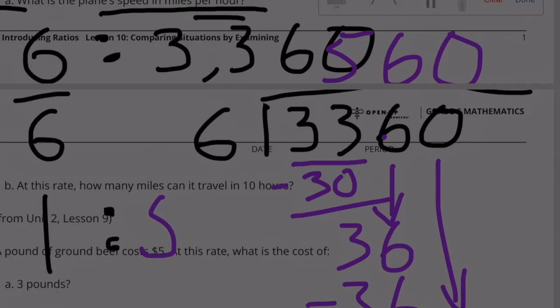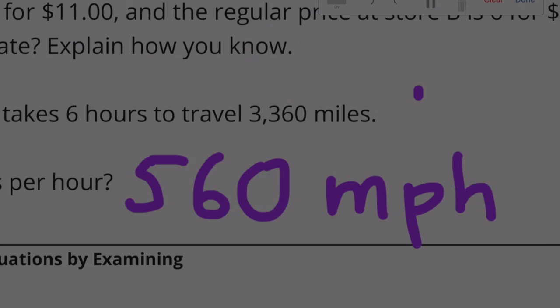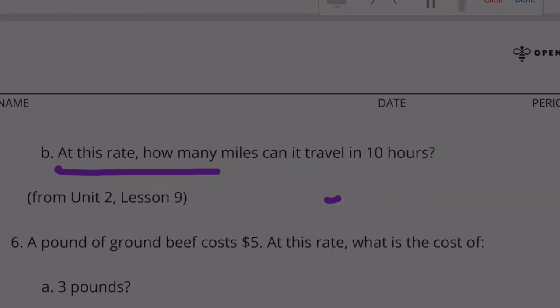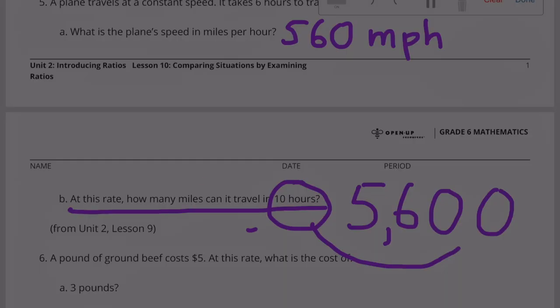So it's 1 to 560. Which means 1 hour, it goes 560 miles. 560 miles per hour. B. At this rate, how many miles can it travel in 10 hours? In 1 hour, it goes 560 miles. So in 10 hours, we need a number 10 times bigger. So it can go 5,600 miles in 10 hours.